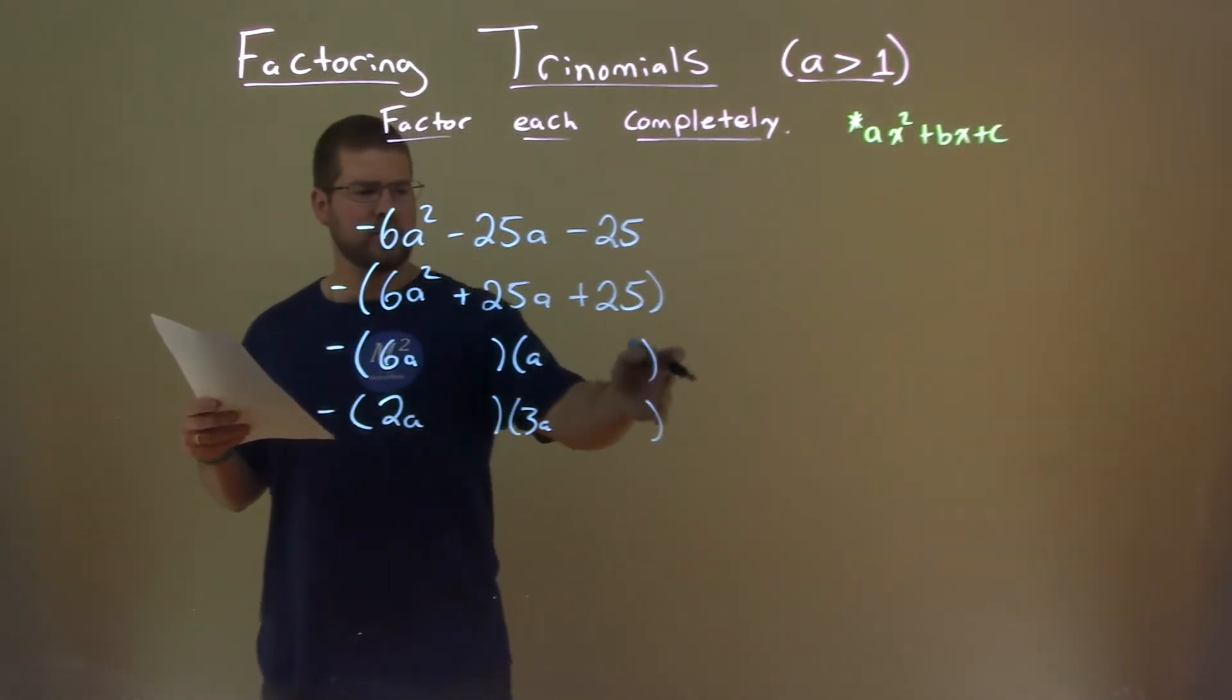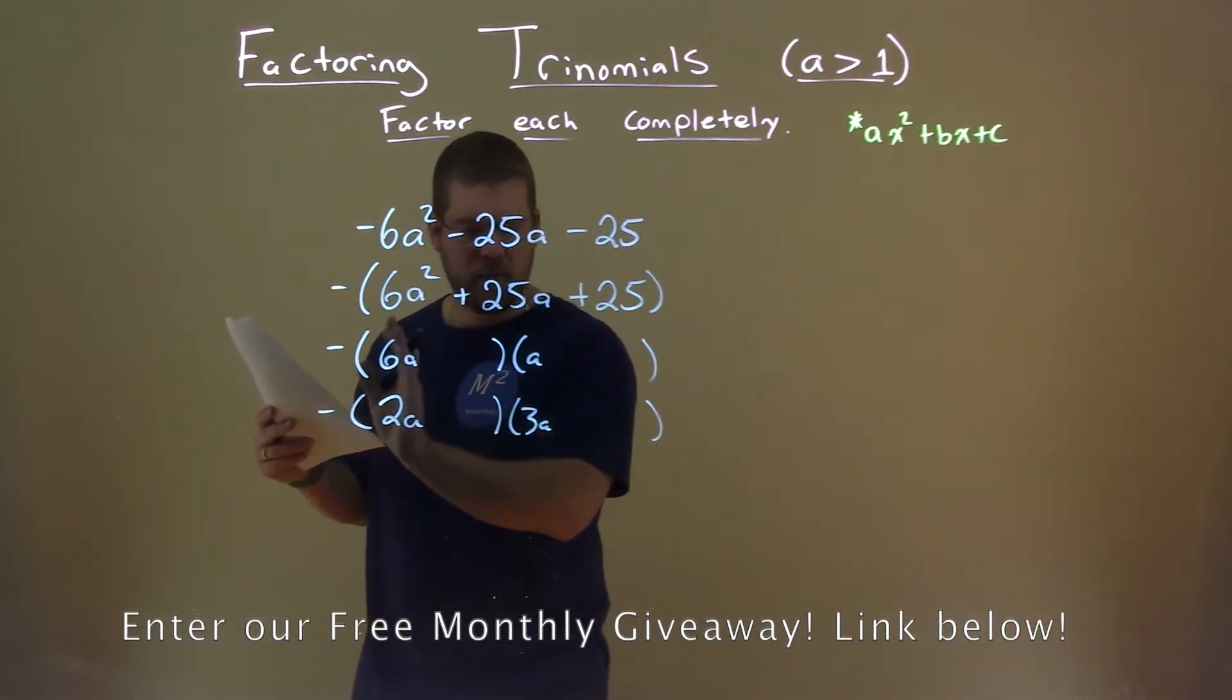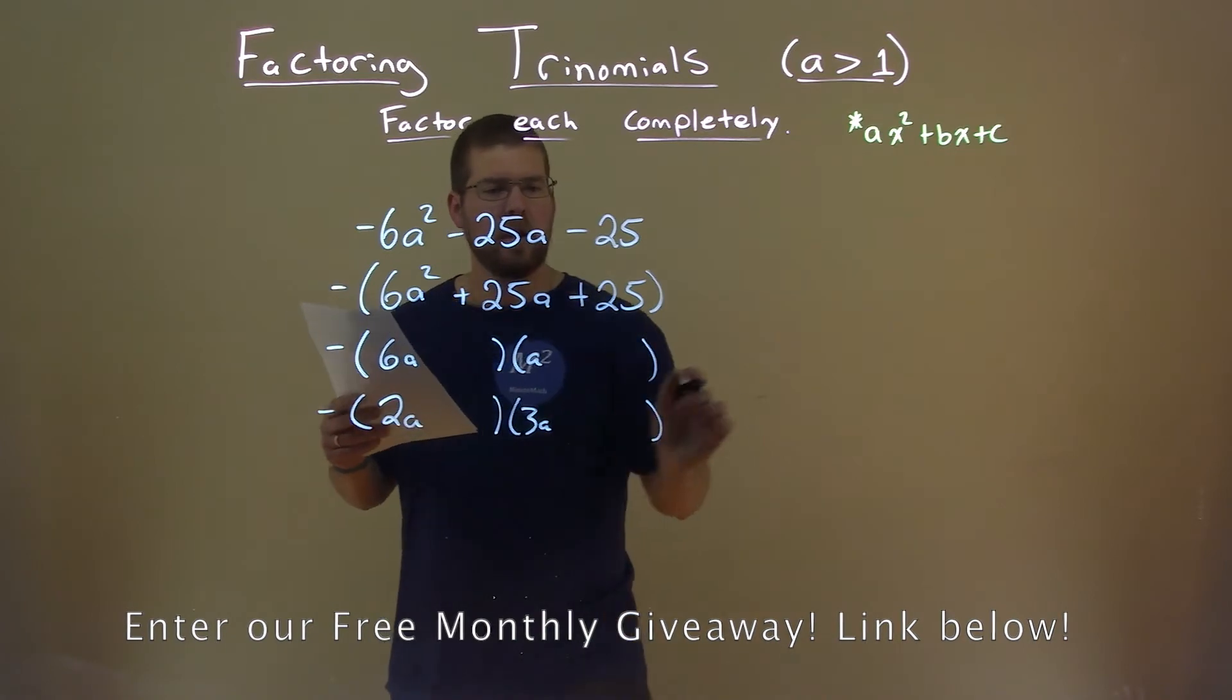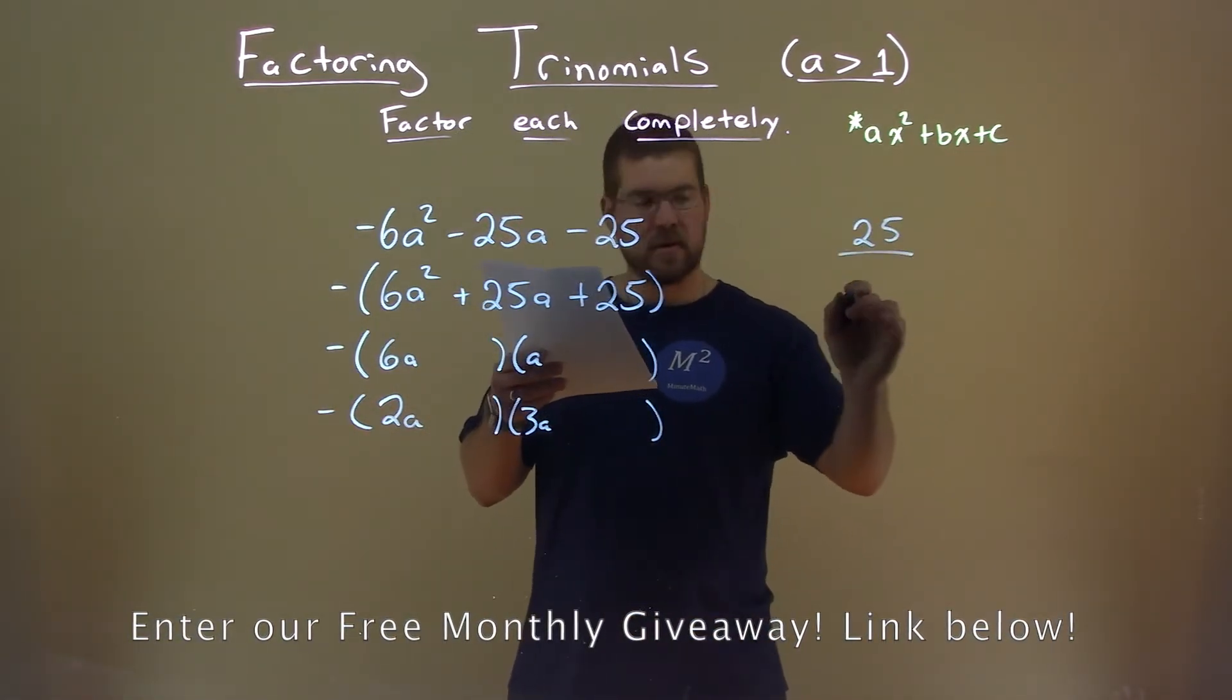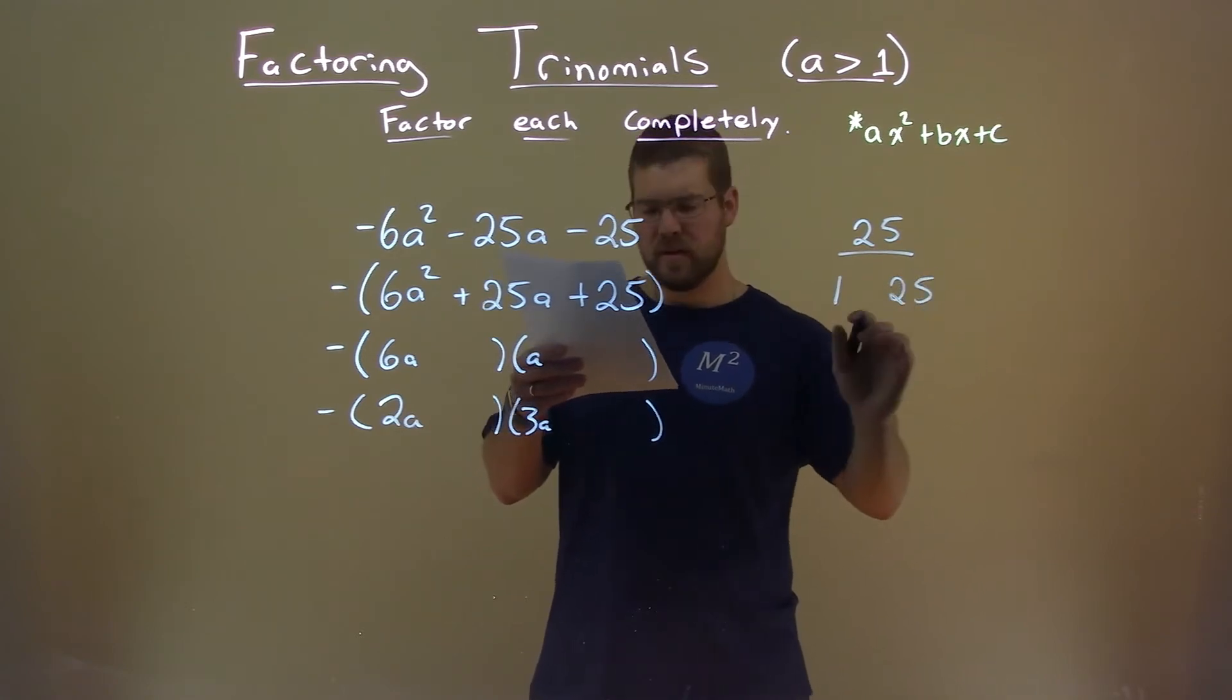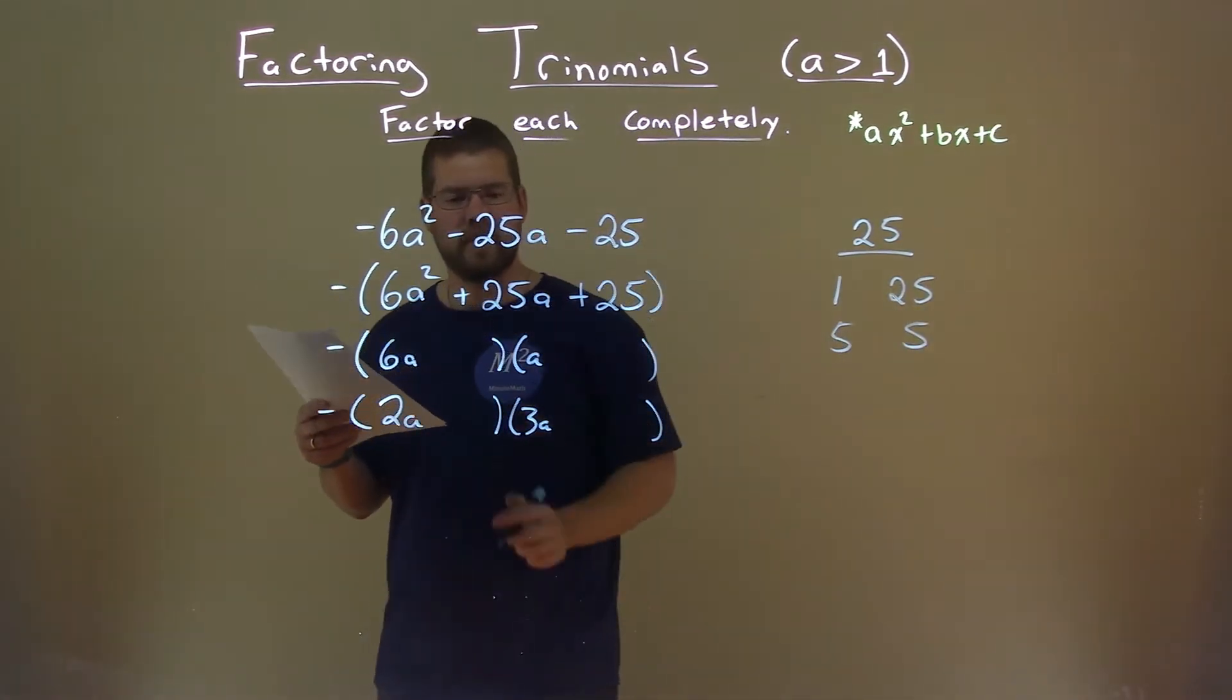Don't forget the negatives. So these are two options as we're moving forward. Now ignore that negative for right now. We're looking on the inside. We're going to see what two numbers multiply to 25. Well, the options are 1 and 25, and 5 and 5. We know they're both going to be positive because the b value is positive.